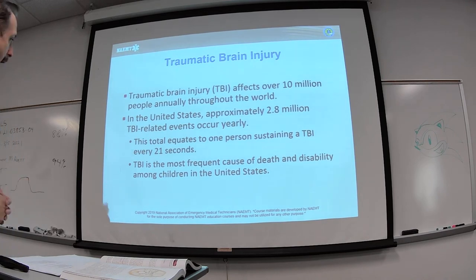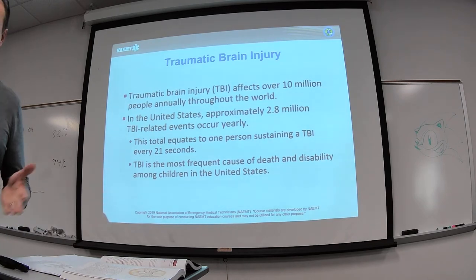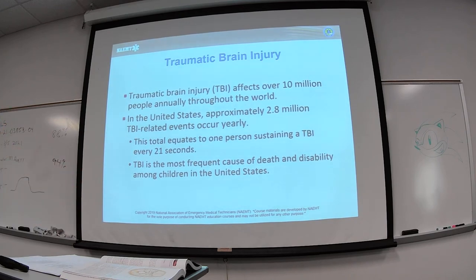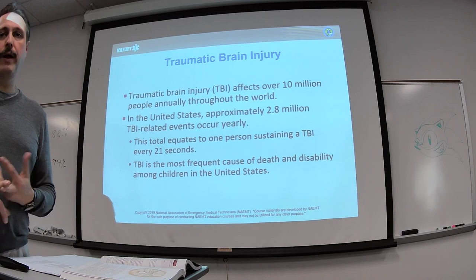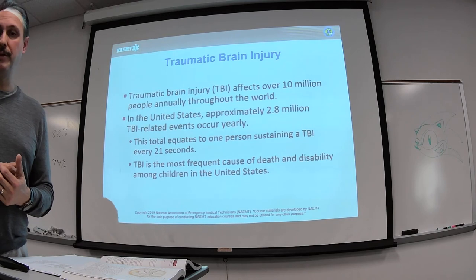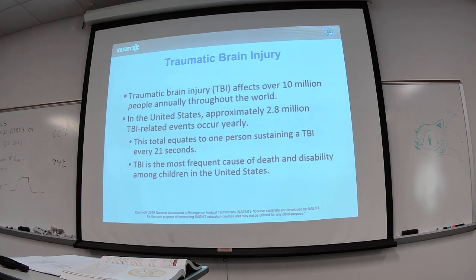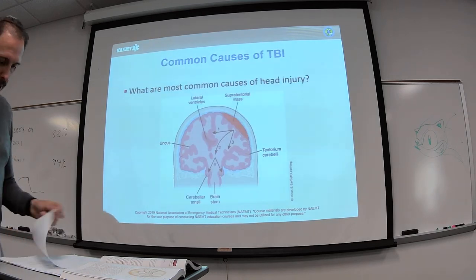TBI is the most frequent cause of death and disability among children in the United States. Infants fall from about one month to one year of age, but roughly around ages three to four is when children suffer the most traumatic brain injuries — that's when they're playing outside on swings, running around, or in cars, often not properly seat-belted.